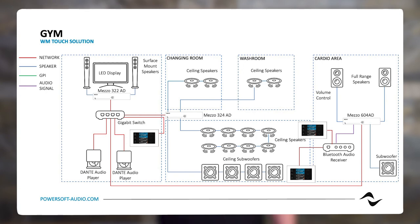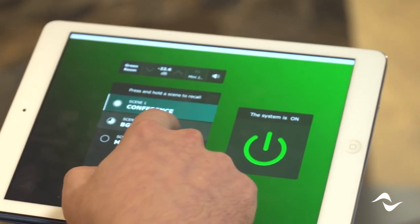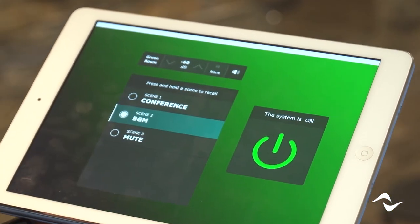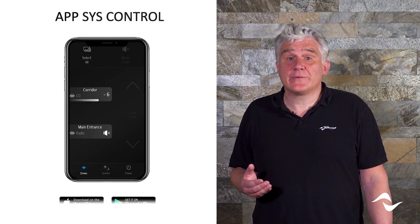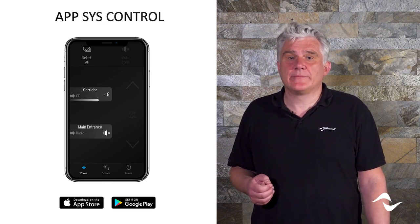The WM Touch is able to autonomously run a system comprising of WM Touch panels in combination with system control via mobile devices. Additional system control can be offered using a mobile device with a web browser, like an iPad, tablet or any other device. Any Android or iOS mobile phone can also control the system using PowerSoft's dedicated sys control app.